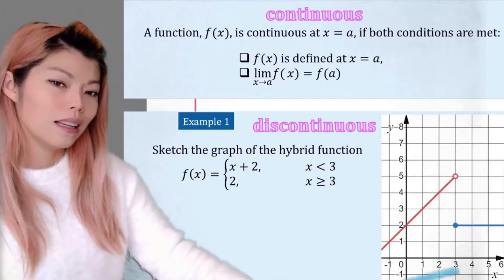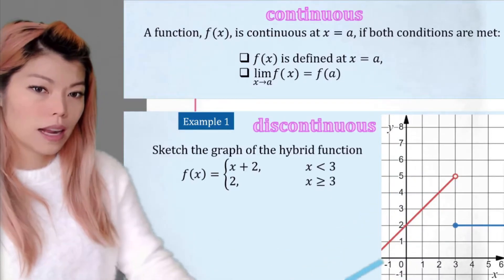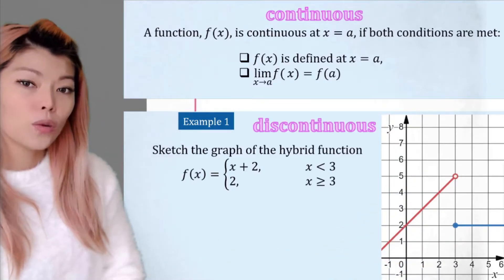Now we can clearly see that there's a gap there. This is not continuous at x equals 3. But how do we explain this?